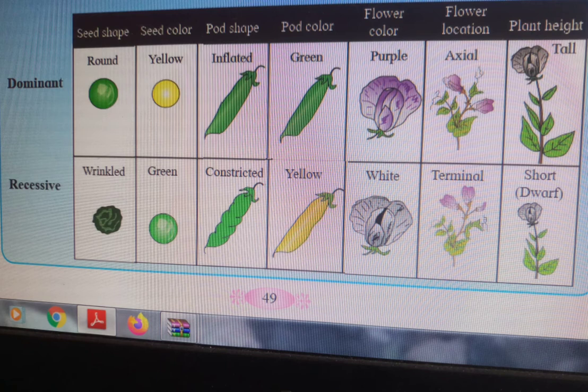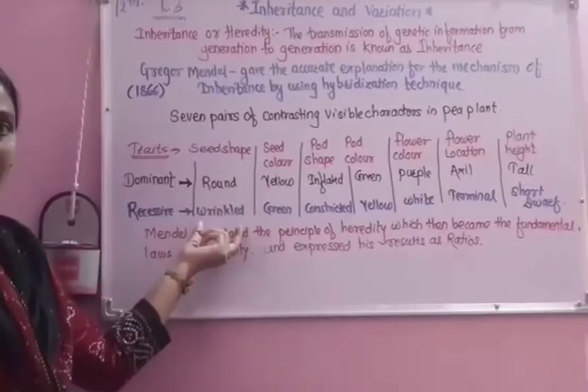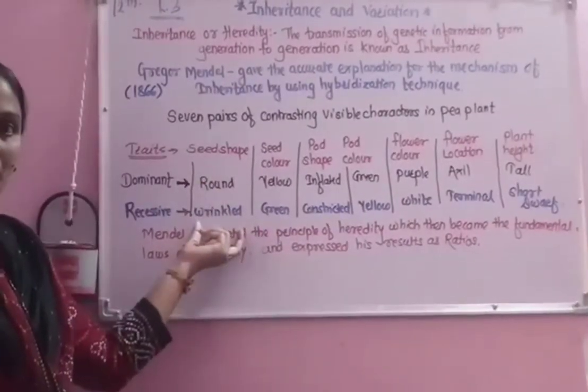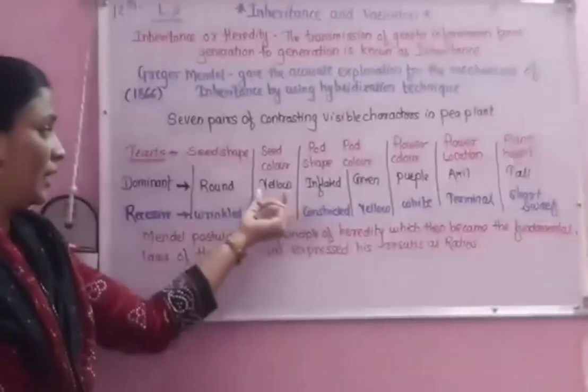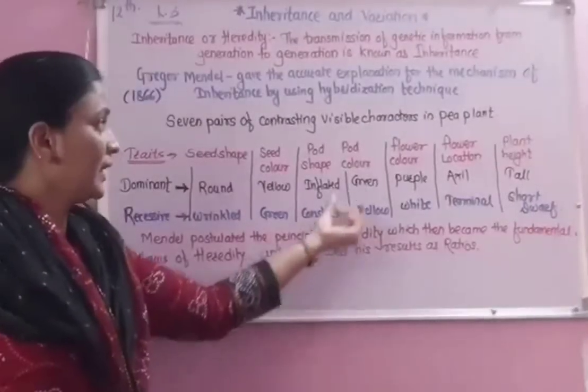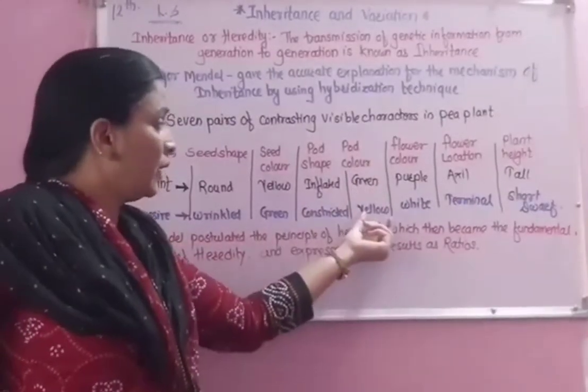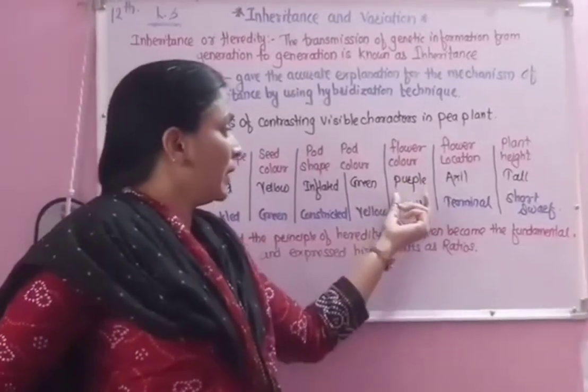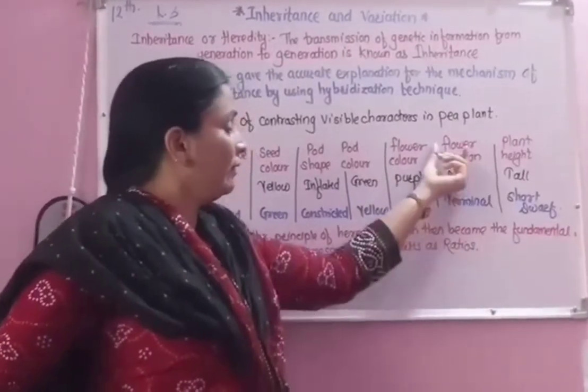For each trait, there are 2 contrasting characters. For seed shape: round versus wrinkled. For seed color: yellow versus green. For pod shape: inflated versus constricted. For pod color: green versus yellow. For flower color: purple versus white.